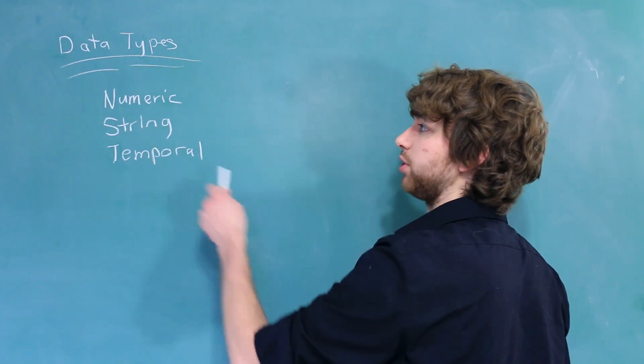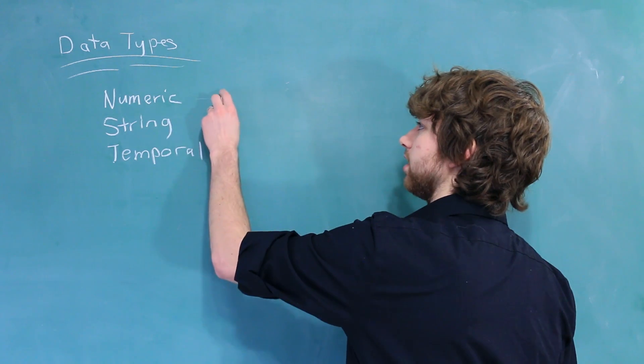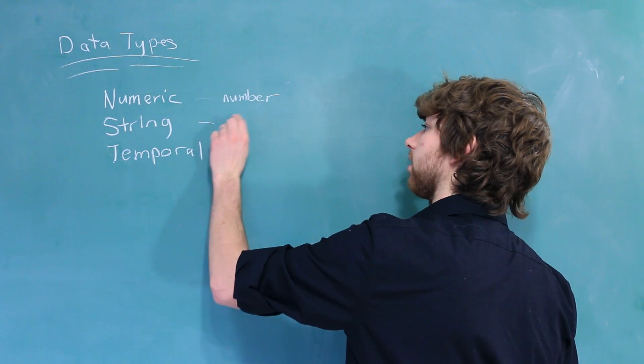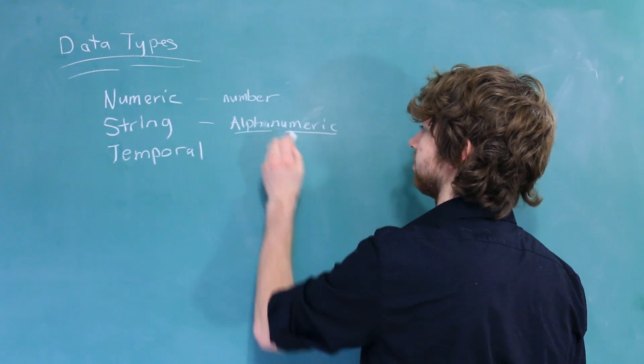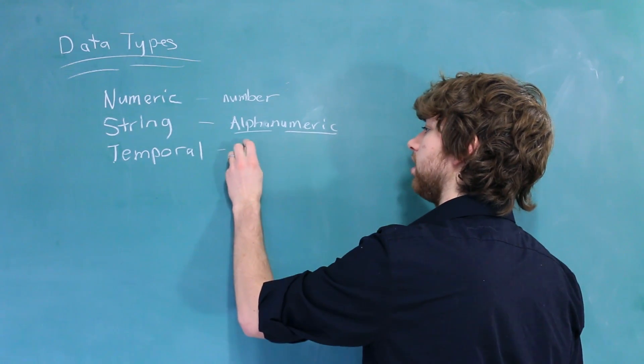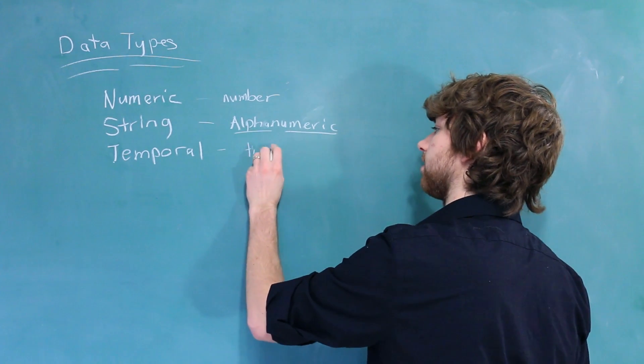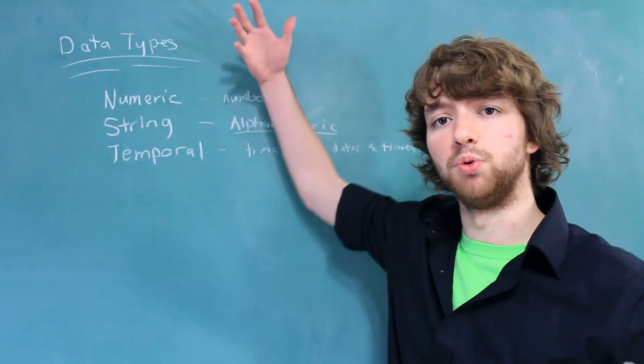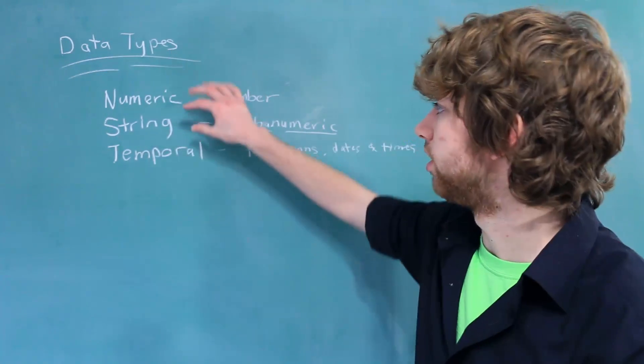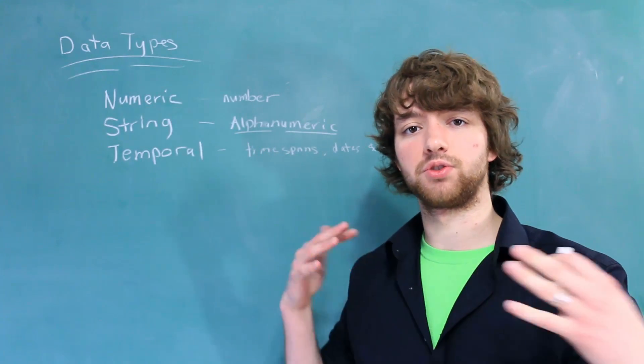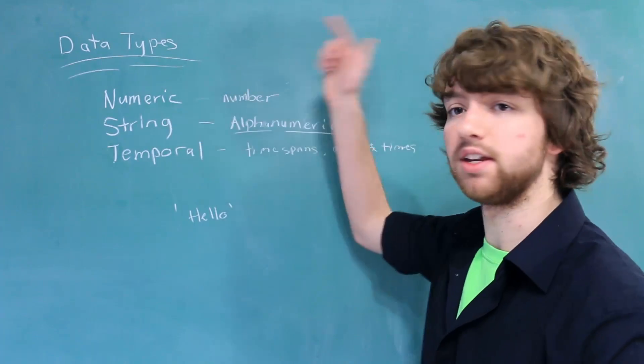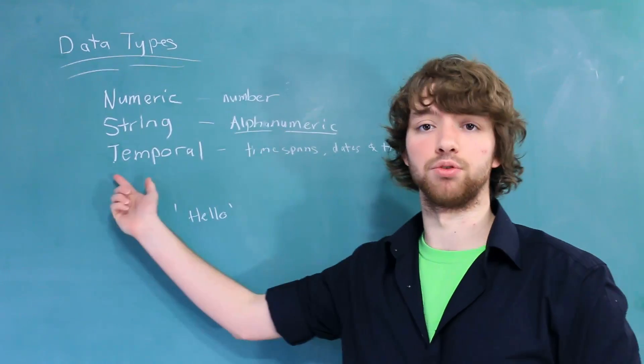If you are not super familiar with these words, you could say numeric is numbered data types. String is alphanumeric, which means characters and numbers. And then temporal is time spans and dates and times. So these ones have to do with numbers, something you would do math with. String has to do with characters or sequence of characters, so anything inside of quotes. And then anything dealing with time is temporal.